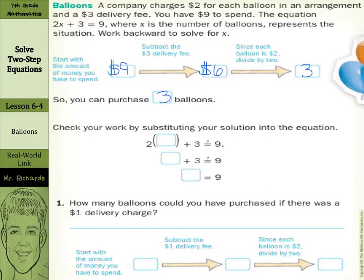Now it says you can check your work by substituting your solution into the equation. Remember, our original equation was 2x plus 3 equals 9. So we can put our 3 back in for x. 2 times 3 plus 3 does it equal 9? 2 times 3 is 6, and 6 plus 3 is 9, and 9 does equal 9, so it is checked.